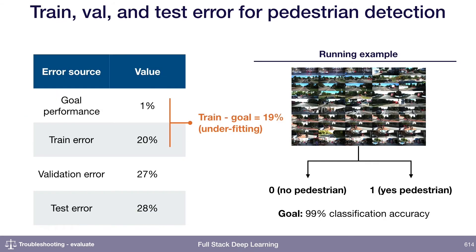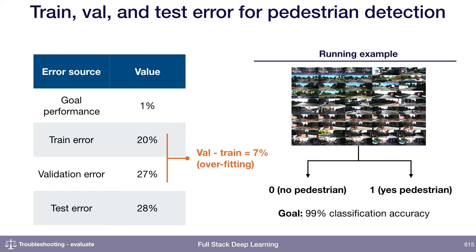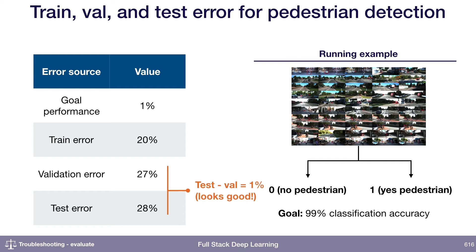Let's look at an example. For pedestrian detection, suppose our goal performance is 1%. If we have a training error of 20%, the difference between training error and goal performance is 19%, so we're massively underfitting. But the difference between our training error and our validation error is also 7%, so in addition to underfitting, we're also overfitting at the same time. And then maybe our validation error and test error are about the same, which looks reasonably good.